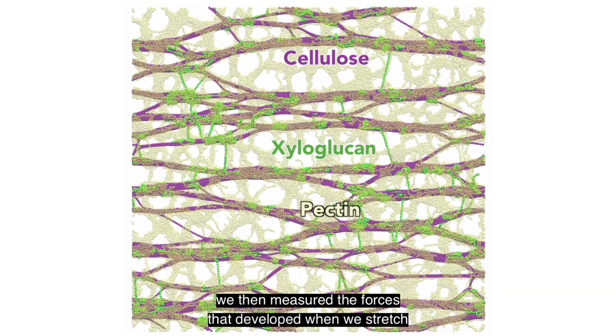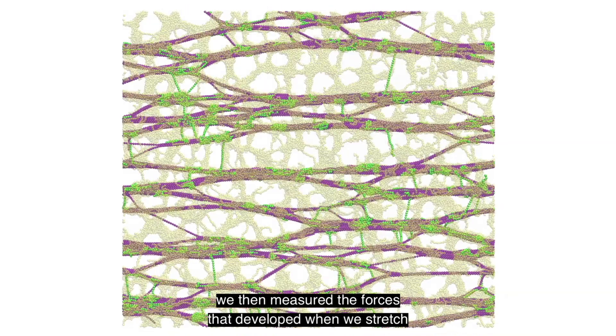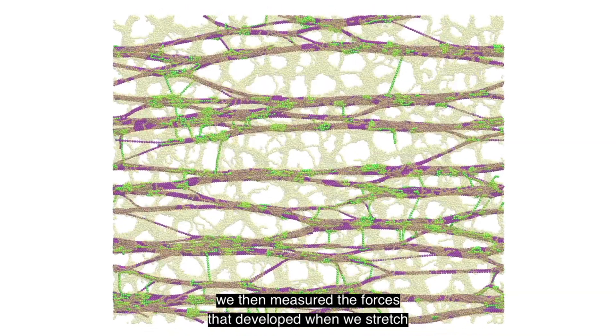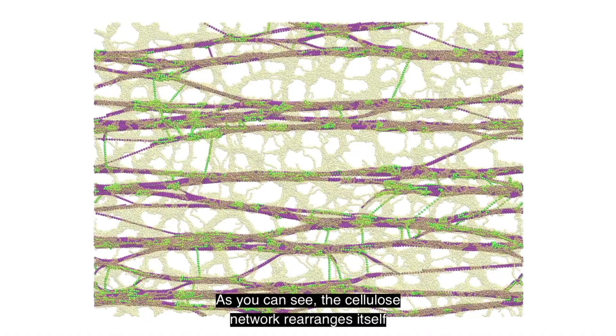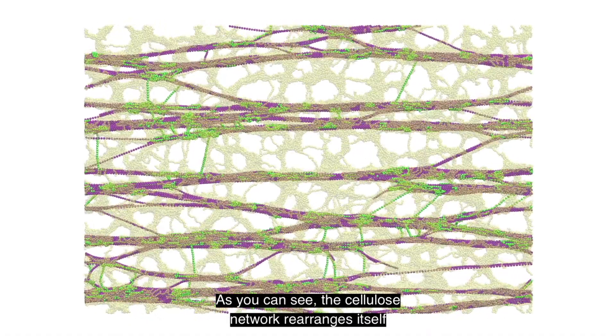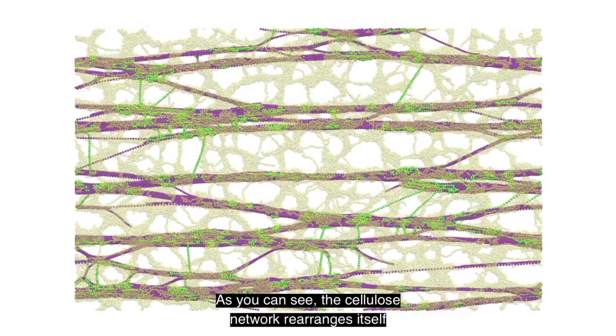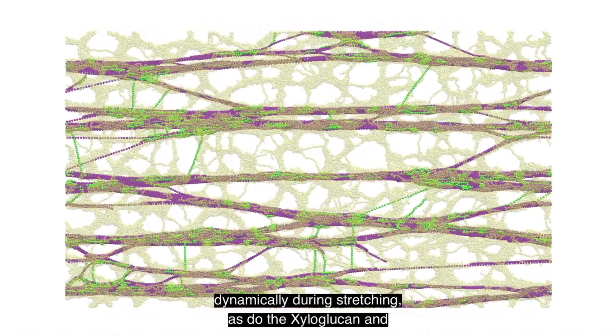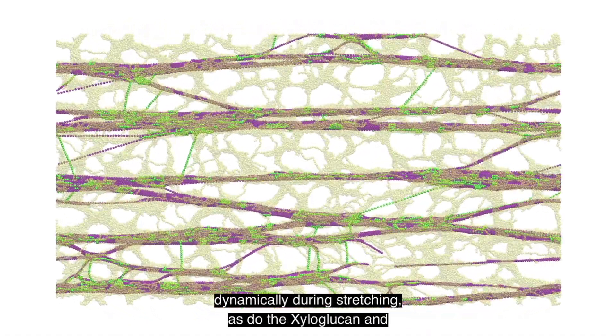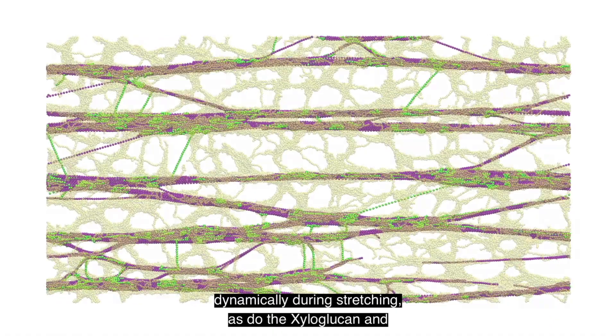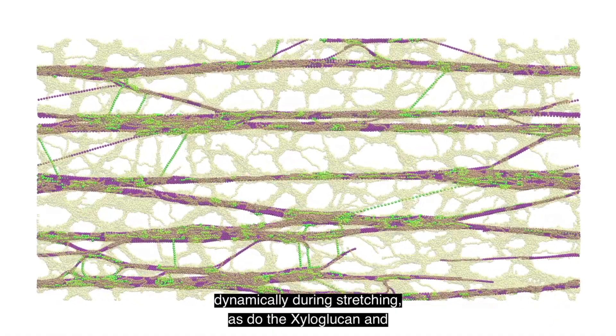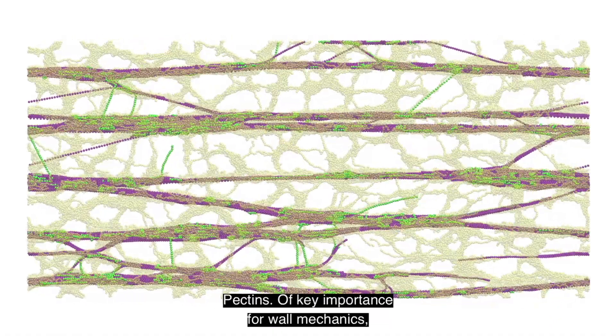We then measured the forces that developed when we stretched this digital wall. As you can see, the cellulose network rearranges itself dynamically during stretching, as do the xyloglucans and pectins.